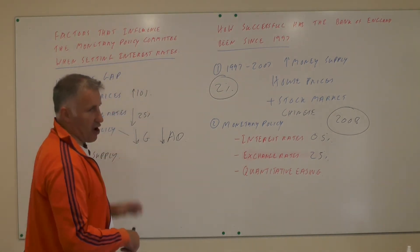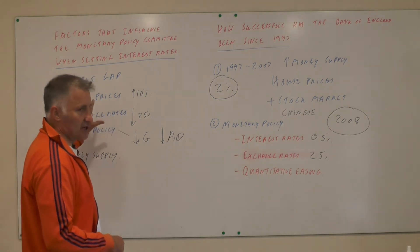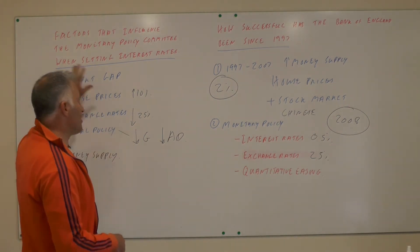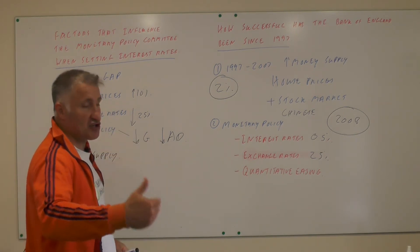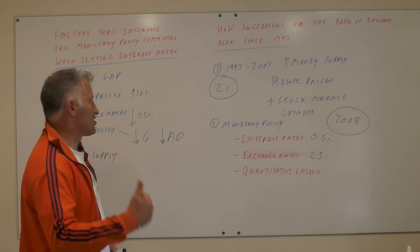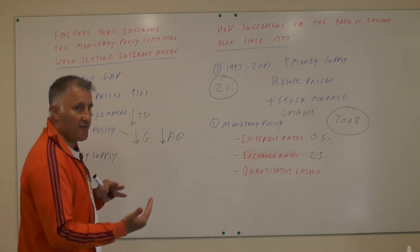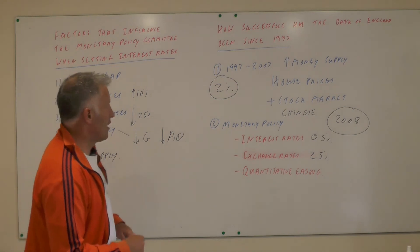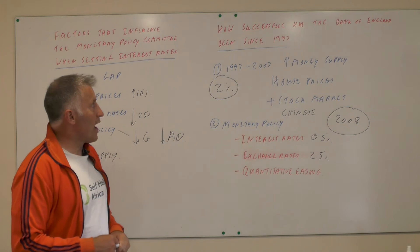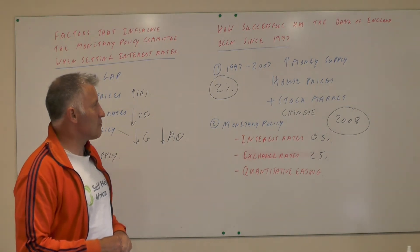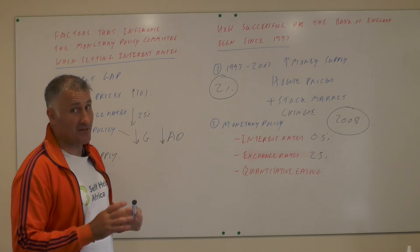Overall, there are hundreds of factors the Bank of England takes into account when setting interest rates, but those are some of the bigger ones. They'll also look at, for instance, whether there's a recession in the eurozone — if so, there'll be less demand for UK exports and therefore less aggregate demand. How successful has the Bank of England been? I think they were pretty unsuccessful during the period 1997 to 2007.